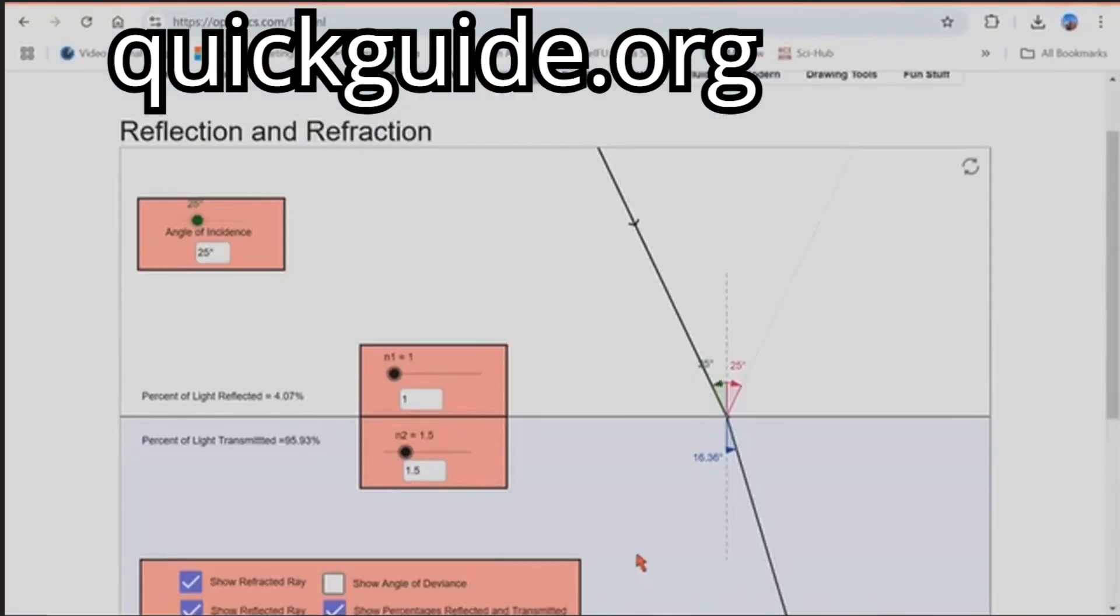In this example, light is traveling from air at an angle of 25 degrees to glass which has a refractive index of 1.5. The angle of refraction is 16 degrees. If we change the angle of incidence of the light ray to 20 degrees, then the refracted ray passes at an angle of 13 degrees. A constant ratio between the angle of refraction is maintained as long as the two mediums remain the same.